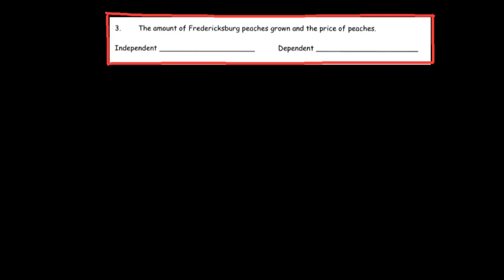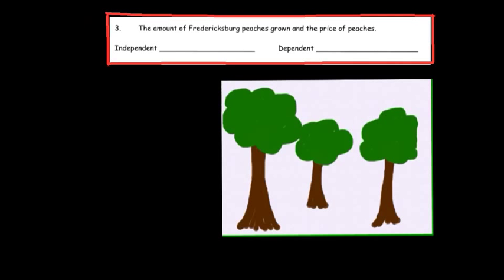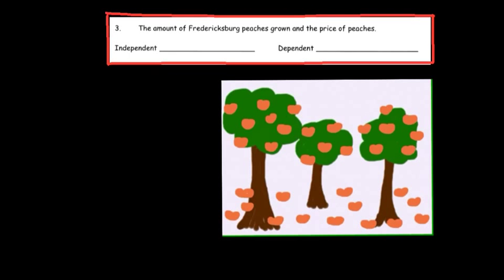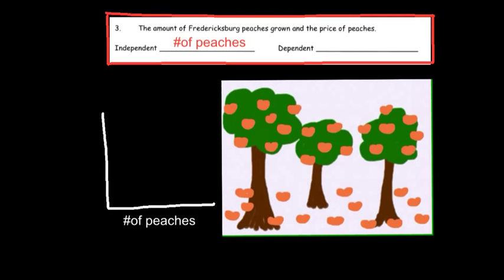This one is a bit of an economics lesson: the amount of Fredericksburg peaches grown and the price of the peach. Think of it like the cost of gas — when the cost of gas rises, it's because there's not a lot of gas available. When the cost of gas decreases, we have an overabundance. Similarly with peaches: when there aren't many peaches, the price is more expensive; when there are too many, the cost drops. So the price of the peach depends on the amount of peaches. The number of peaches is the independent variable, and the price per peach is the dependent variable. As the number of peaches increases, the cost decreases.